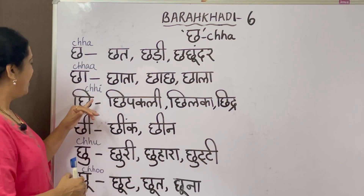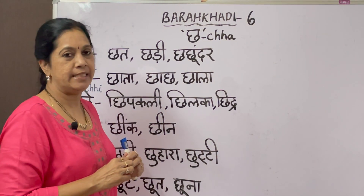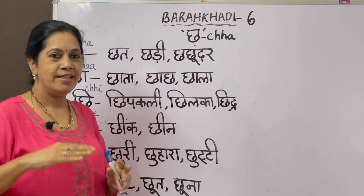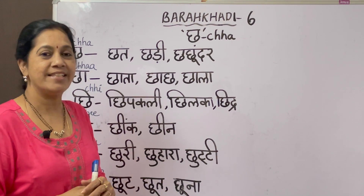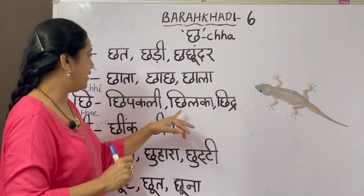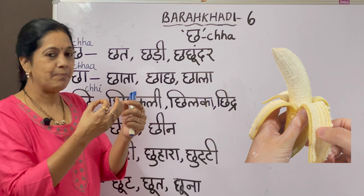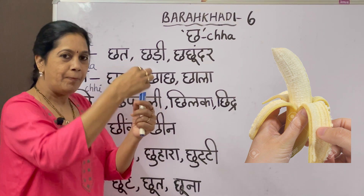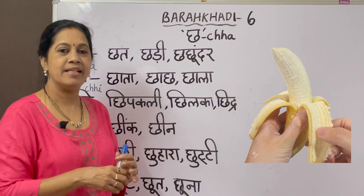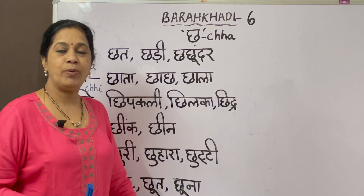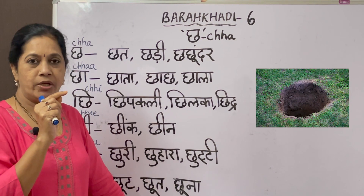The next letter is 'chhi.' The word is 'chipkali' - chipkali you will find at home, going on the walls, moving on the wall. It is a reptile. Yes, you guessed it right - it is lizard. Lizard is chipkali. The next one is 'chilka' - kela means banana, and when you peel it, that peel is called chilka. A peel of a fruit is chilka. The next one is 'chidra' - chidra means hole.